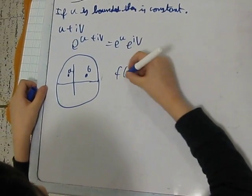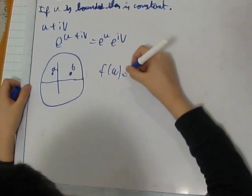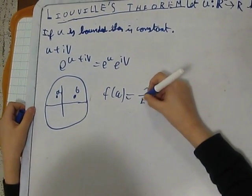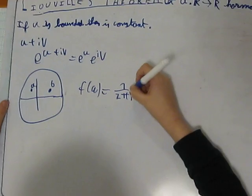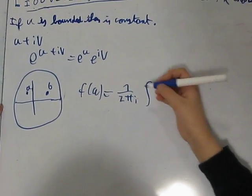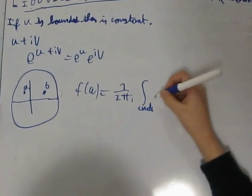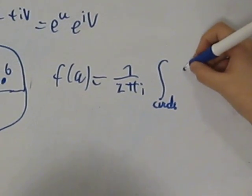So, F of A, by the Cauchy integral formula, is this. A circle of radius R.